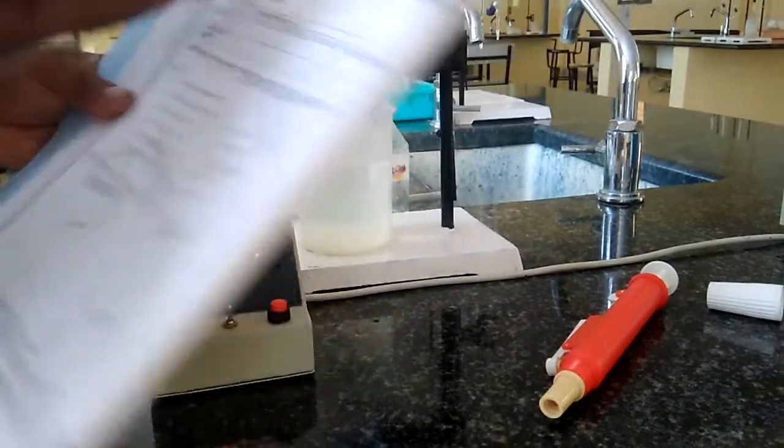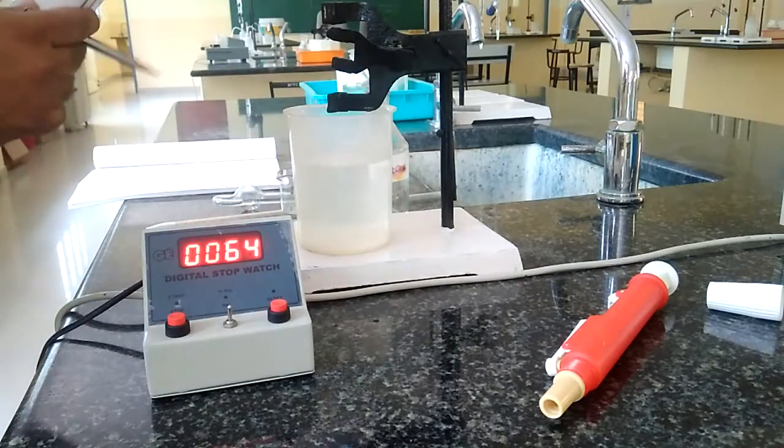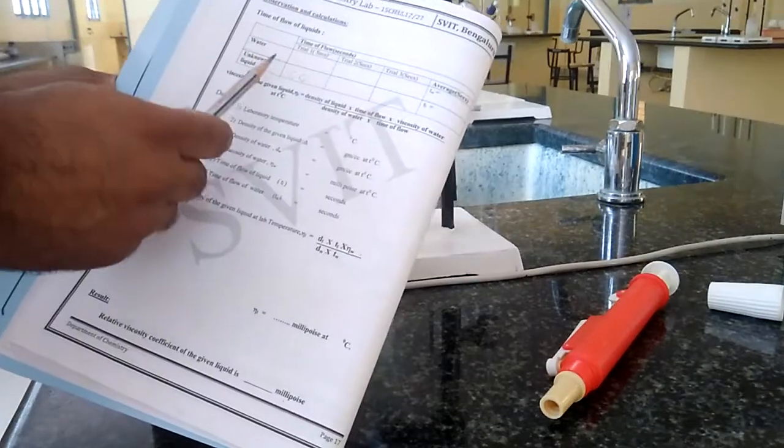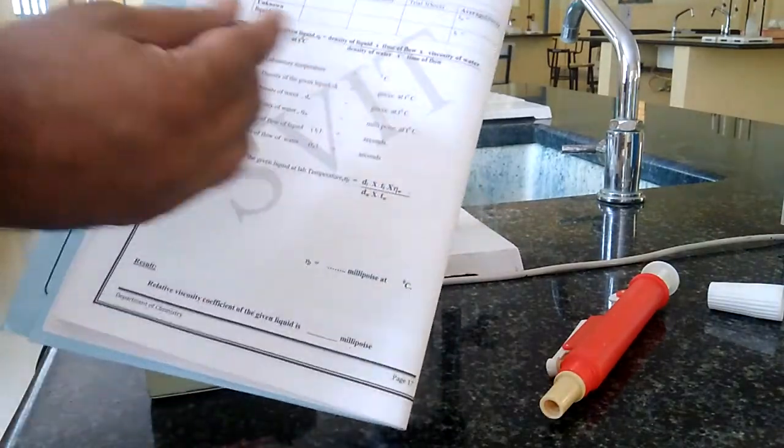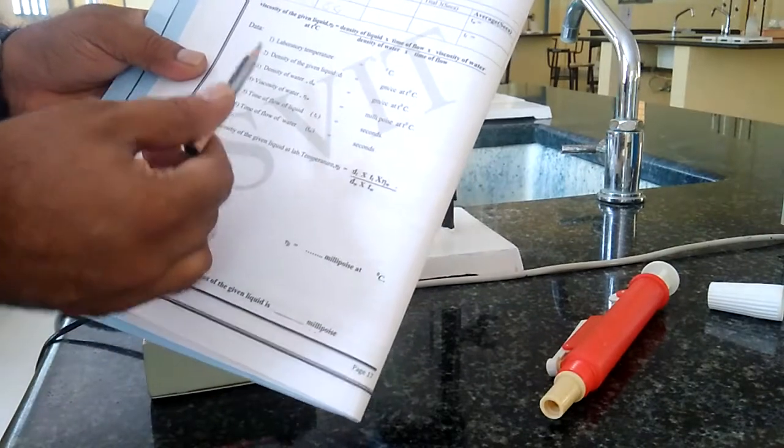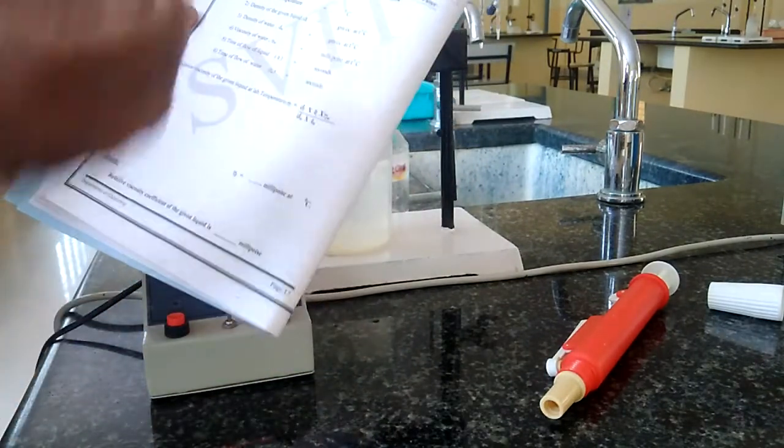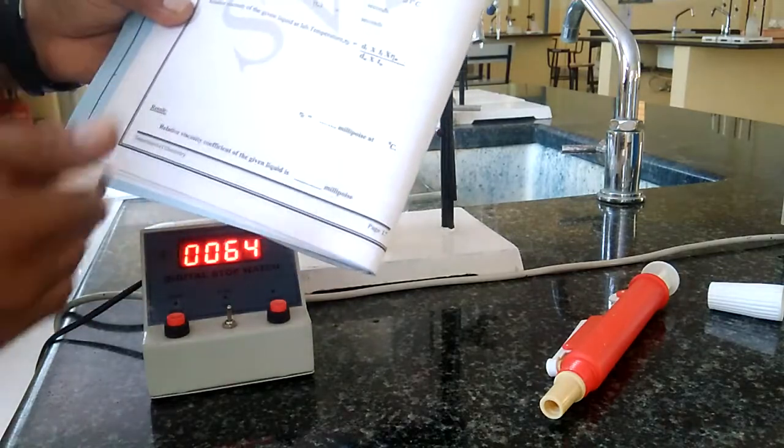After getting the viscosity readings for the water and the liquid, we have to do the calculation. We have Poiseuille's equation; with the help of that Poiseuille's equation, we are going to do this experiment.